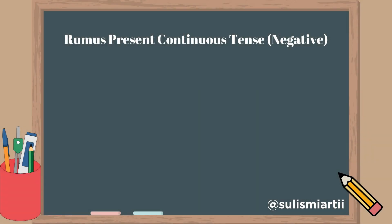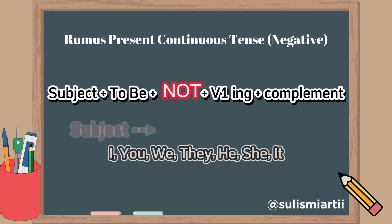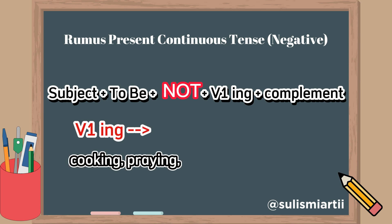Next is the present continuous tense in the negative form. The formula is almost the same; the only difference is there is 'not' after the to be, or before the verb. The formula is: subject + to be + not + verb-ing + complement.